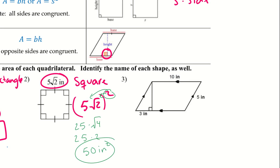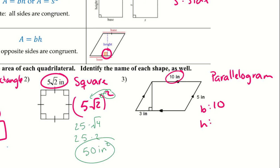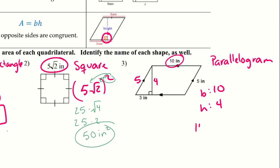Number 3 is a parallelogram. Area equals base times height. The base is given as 10, but we need to find the height. Using the Pythagorean theorem — or recognizing a 3-4-5 Pythagorean triple — the height is 4. So the area is 10 times 4, giving 40 square inches.